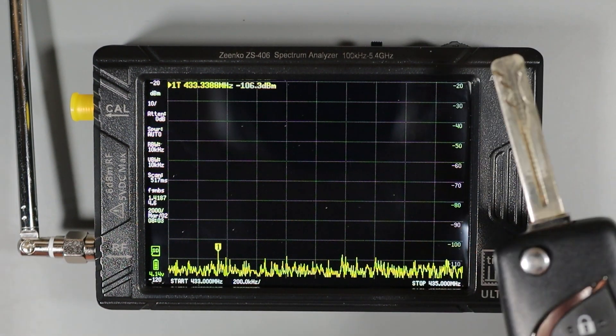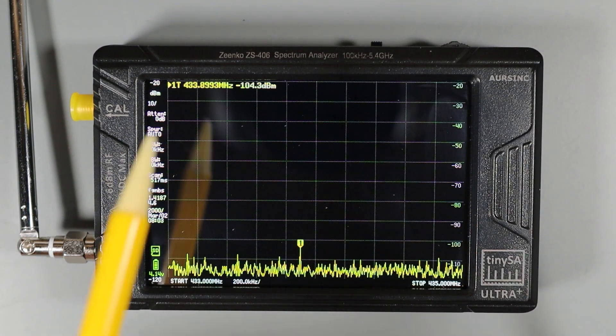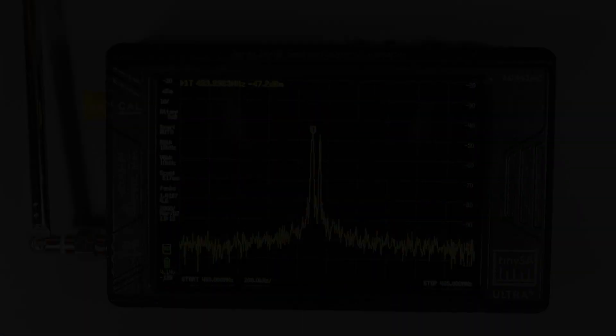Now if you remember the Toyota key fob was transmitting closer to 300 megahertz. So if I now activate this one, we're not going to see any signal spikes because we're not looking at that slice of the spectrum.